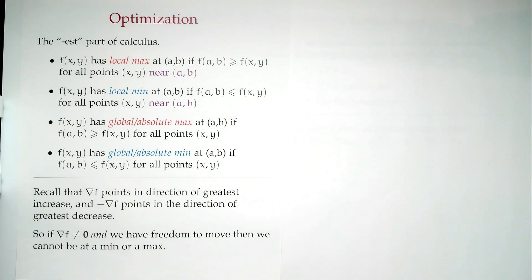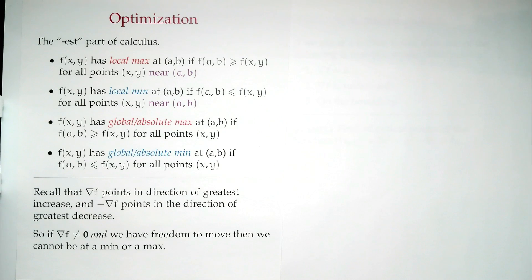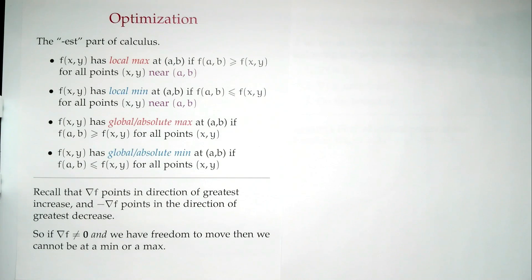One notion is local. I'm a local max if I look at the value of the function and then look at everything nearby — just around me — and nowhere else is bigger than me. Similarly, for a local min, I look at everything close by. How close? However close you need to make it work — in math we use 'epsilon sufficiently small' for this.